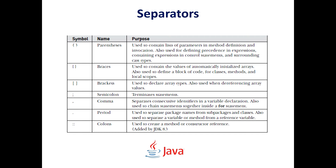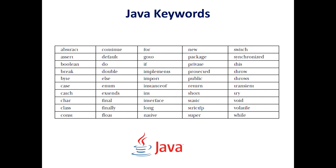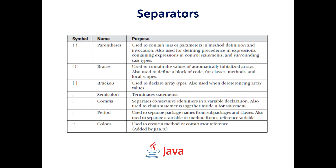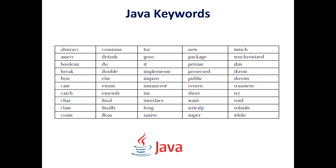The double colon is used to create a method or constructor reference; it was added in JDK 8. Now moving on to Java keywords: there are 50 keywords currently defined in Java, and these keywords combined with the syntax of operators and separators form the foundation of the language.